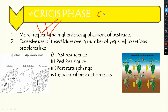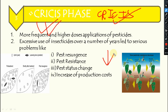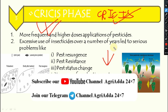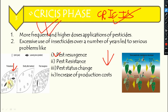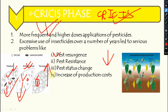The third phase is the crisis phase. Due to the high-dose application of pesticides, yield increased but adverse effects also appeared. This marked the beginning of negative impacts on crops. Pest resurgence occurred — after applying pesticide, both predators and pests were reduced, but the predator population dropped to near zero while the pest population increased abnormally. This abnormal increase of insect population after insecticide application is called pest resurgence.